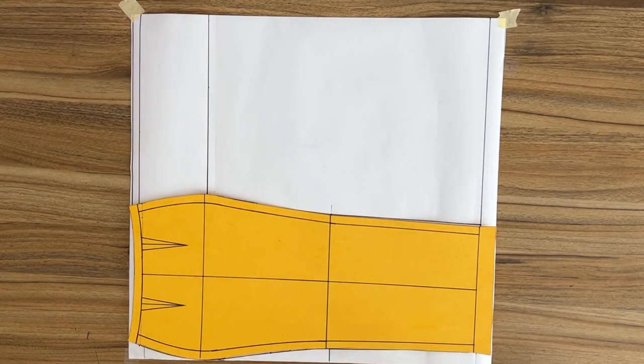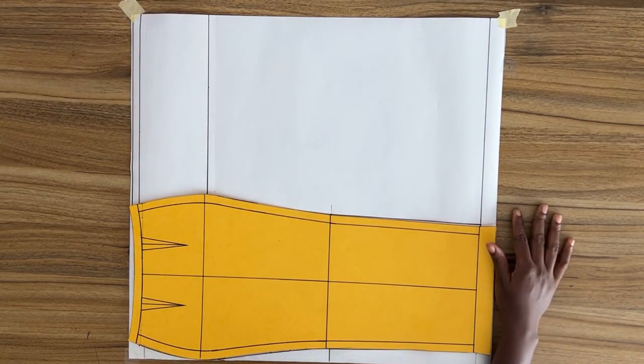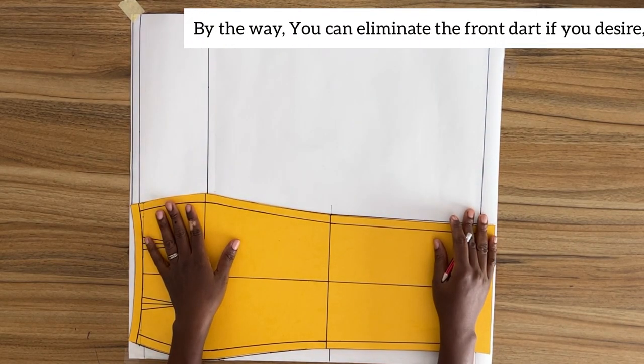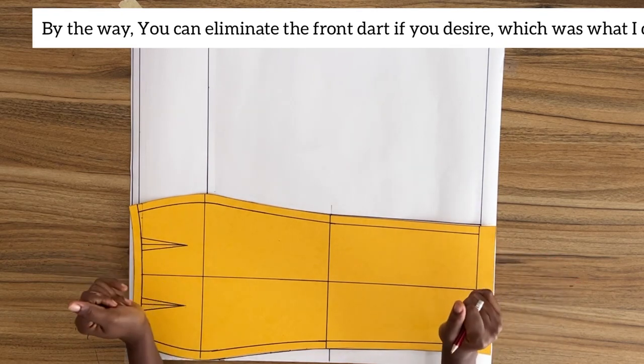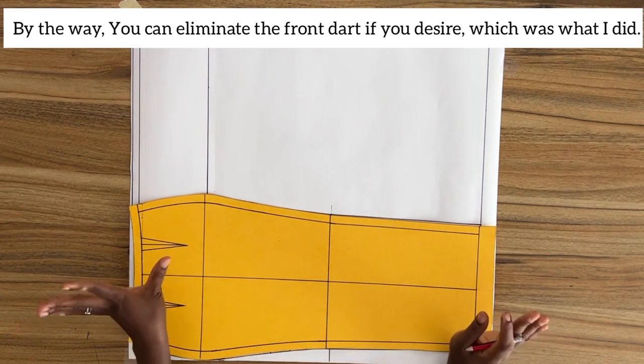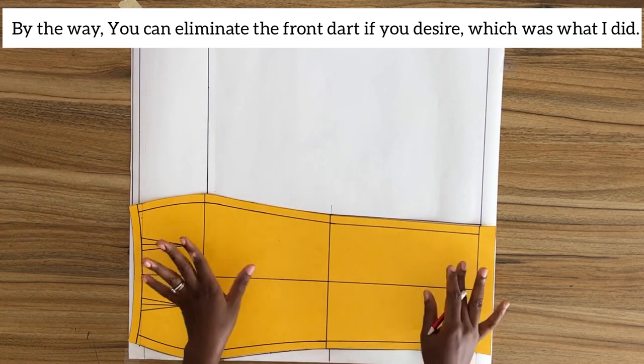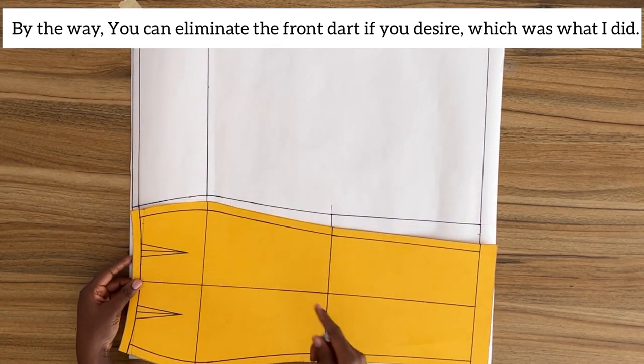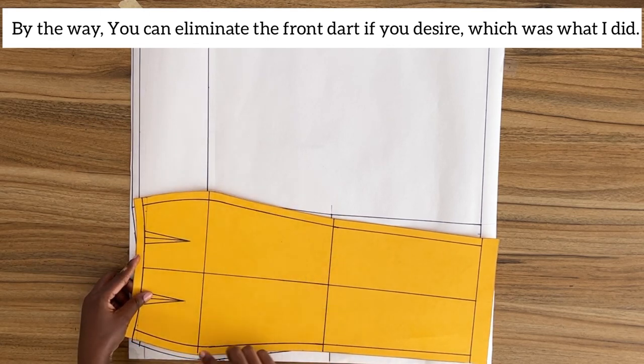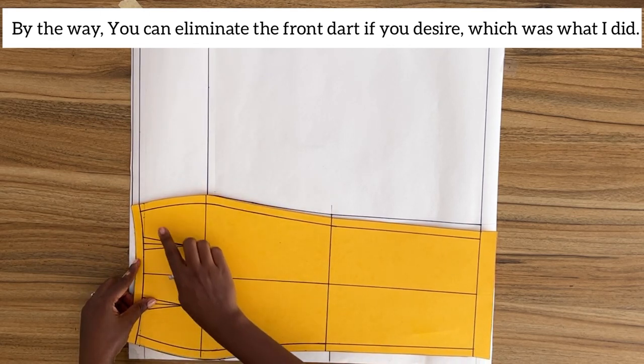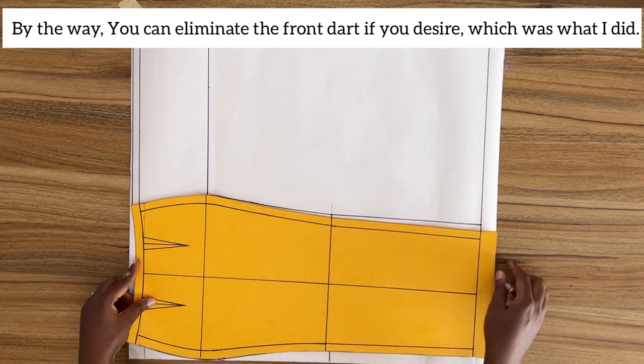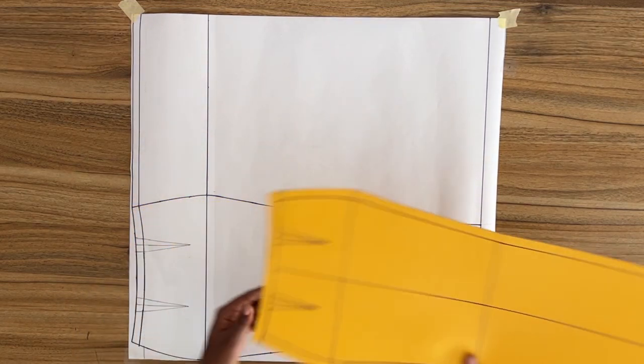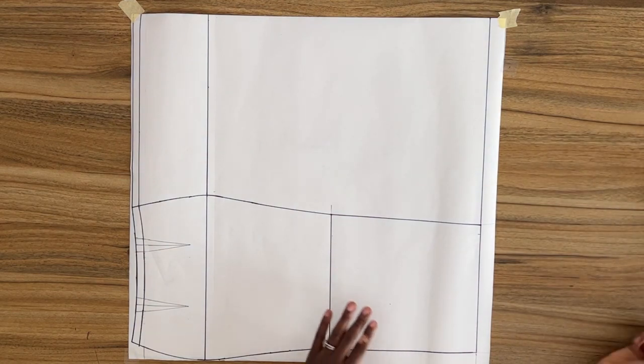So we're going to start by copying a basic skirt pattern onto a fresh pattern paper. You want to copy this pattern together with your seam allowance. Next we need to determine the width of our pattern paper or the width of your fabric if you're drafting directly on your fabric. Now the width of the fabric you would need to draft the whole skirt should be at least twice your hip circumference plus six inches.